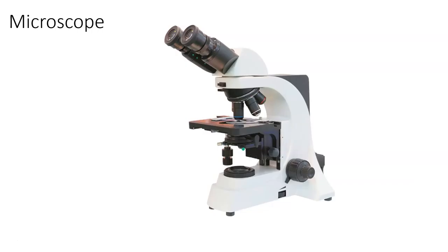A light microscope, like the microscopes you use in class or will use in class, is a compound light microscope. There are a series of external features that you have to understand. You have to be able to use adjustment knobs, diaphragms, and condensers in order to fully clarify the image and see it at the right magnification. We need to understand what the pieces of the microscope are.